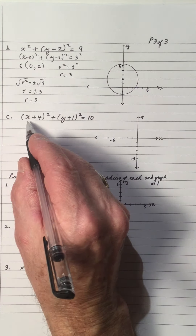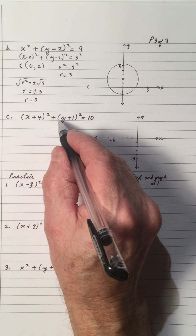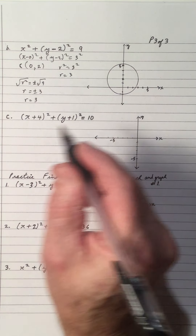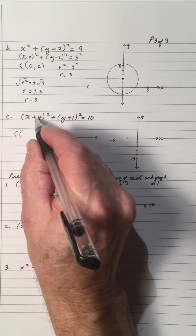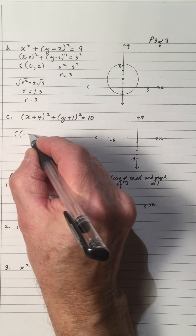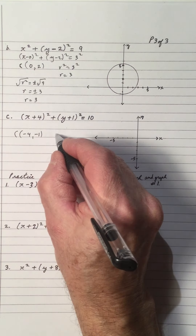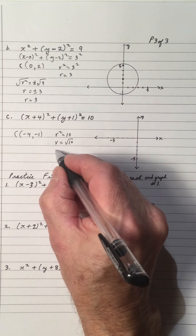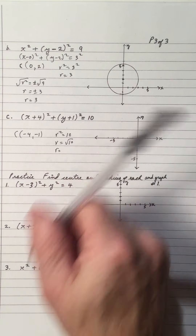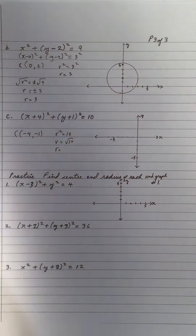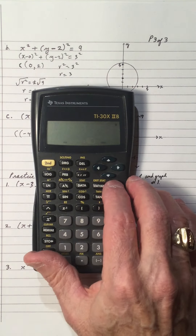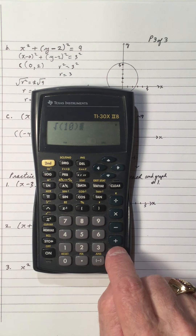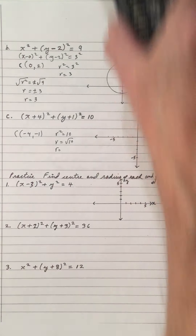Another one: we have (x plus 4) all squared plus (y plus 1) all squared equals 10. So the center is opposite of plus 4, which is negative 4, and opposite of plus 1, which is negative 1. And r squared equals 10, so r equals the square root of 10, which is around 3 point something — approximately 3.2.